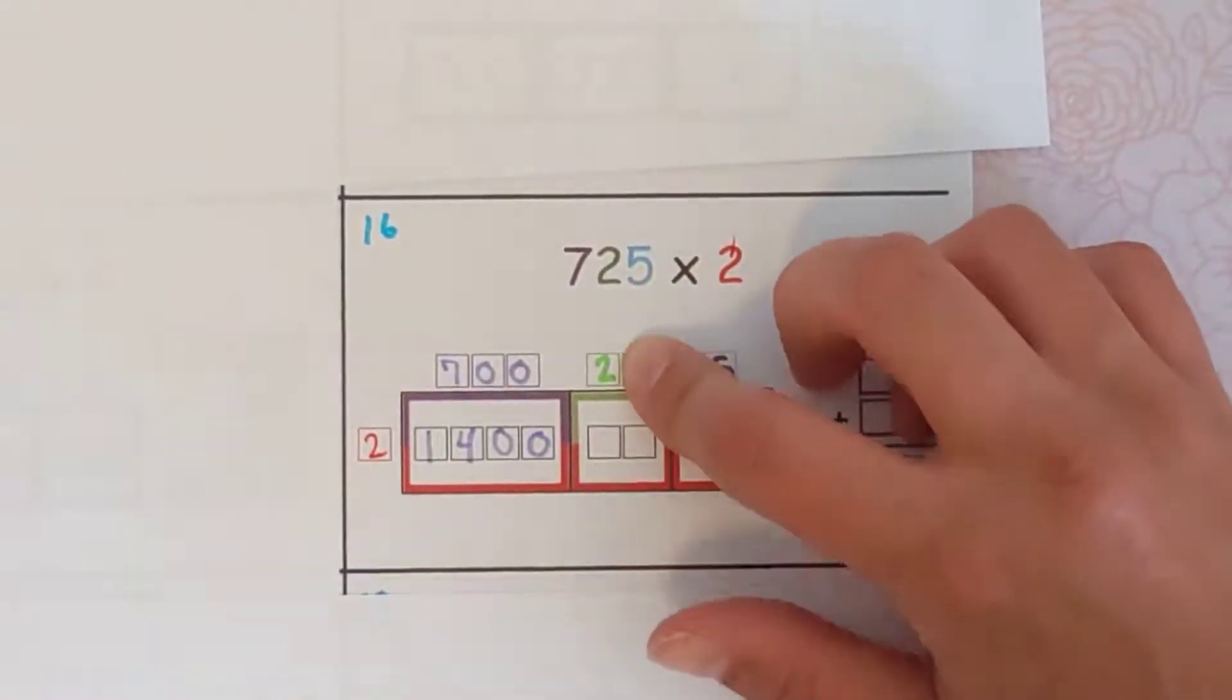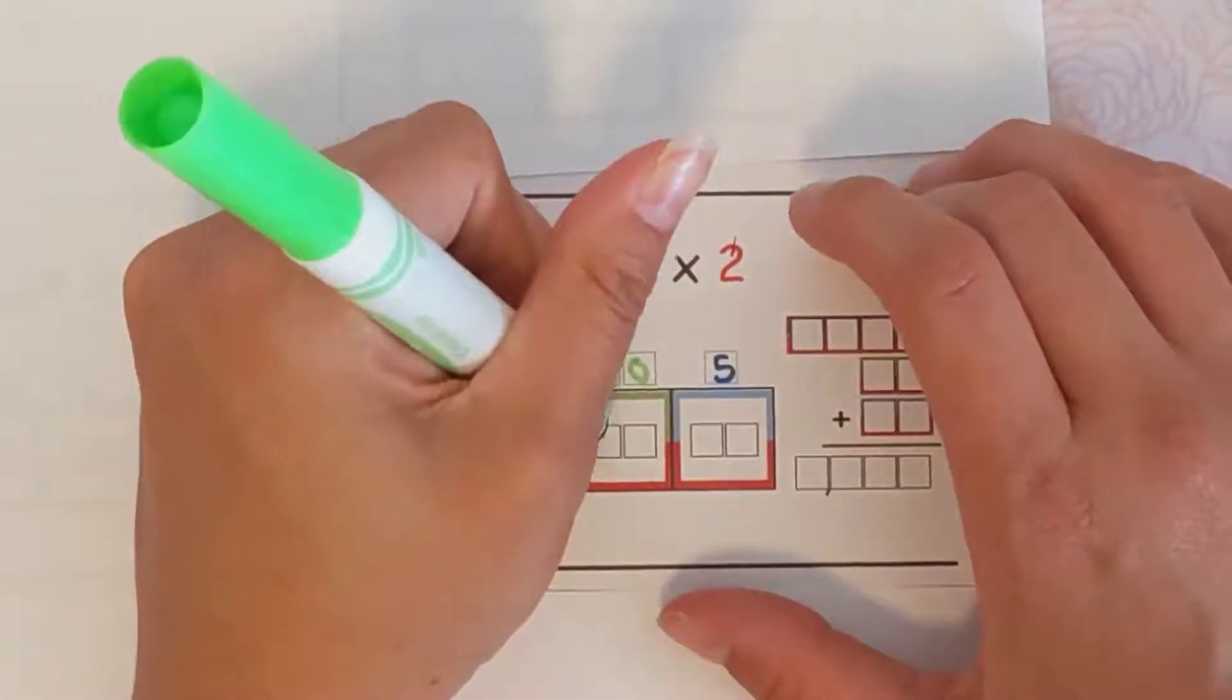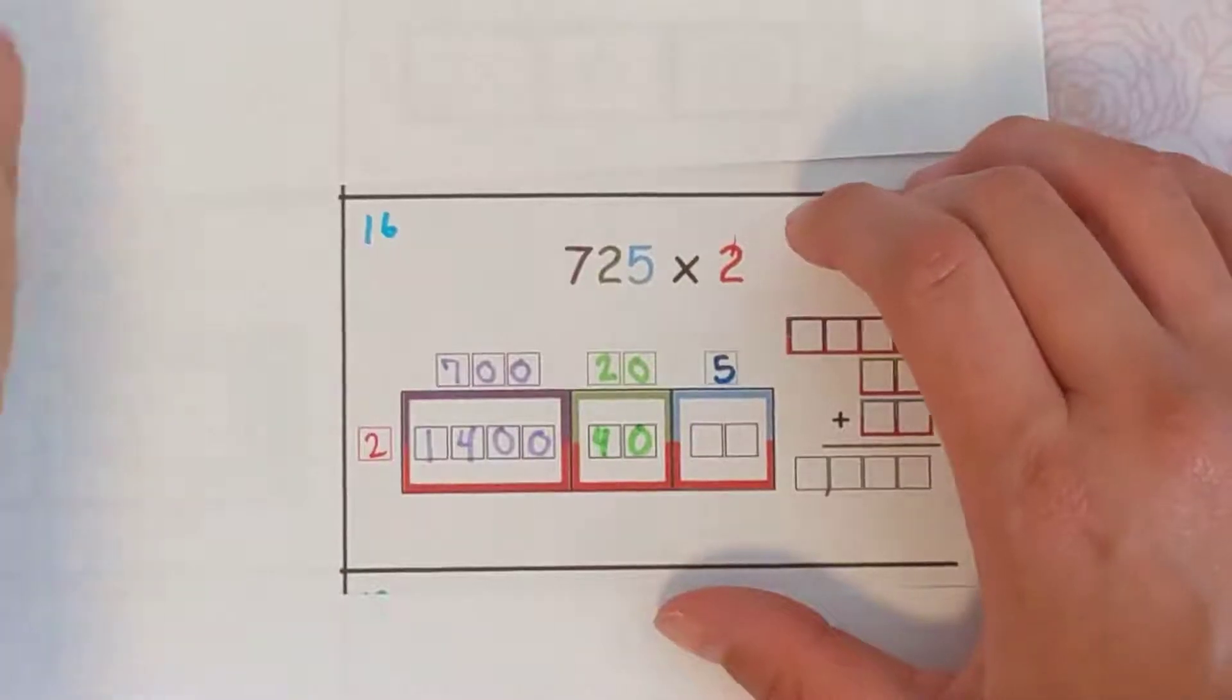2 times 20 is 2 times 2, with a 0, so 40. And then 2 times 5 is 10.